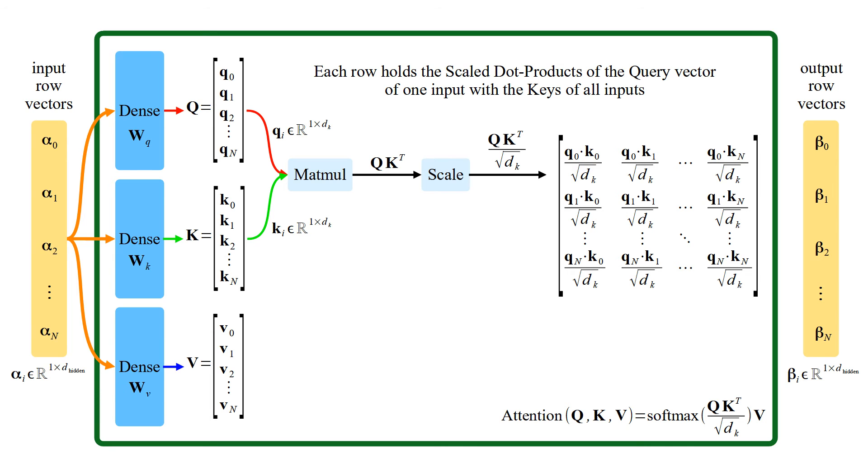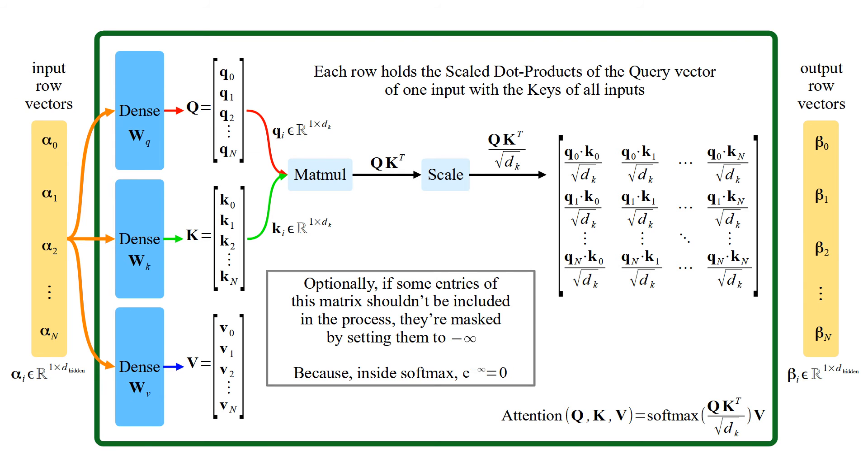Each row holds the scaled dot products of the query vector of one input with the keys of all inputs. Optionally, if some entries of this matrix shouldn't be included in the process, they are masked by setting them to negative infinity. Because inside softmax, e to the power negative infinity is zero. This is the case in transformer decoder for NLP applications.